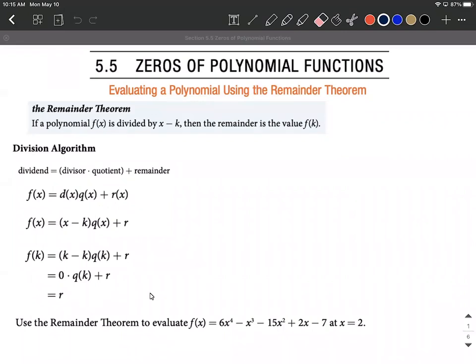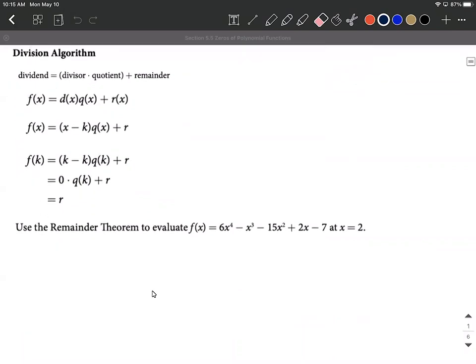Let's put this into practice with a couple of problems, and I'll show you an alternative way to go about this as well. So if we want to use the remainder theorem to evaluate this function, f of x, at x equals 2, that means we're dividing by x minus 2.